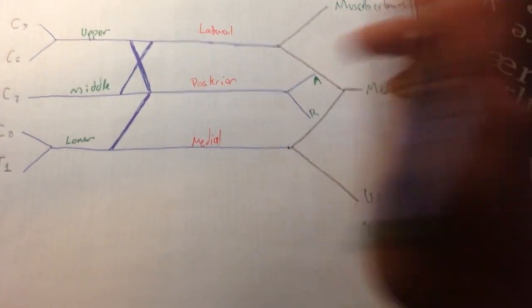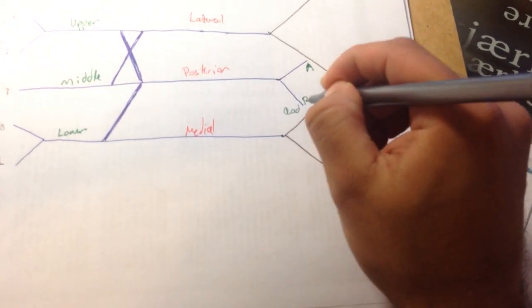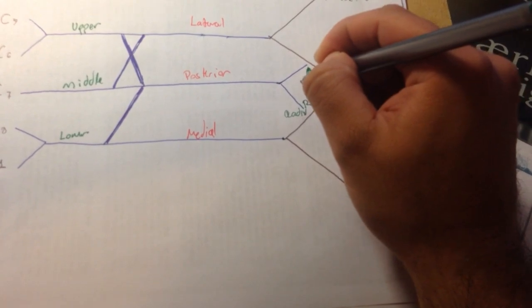These other two are going to be just the radial and the axillary. Axillary and radial. So, it's going to be radial. R for radial. And this is going to be axillary.